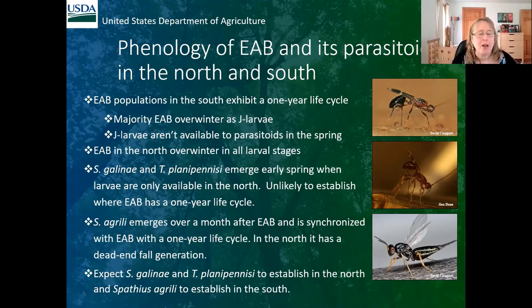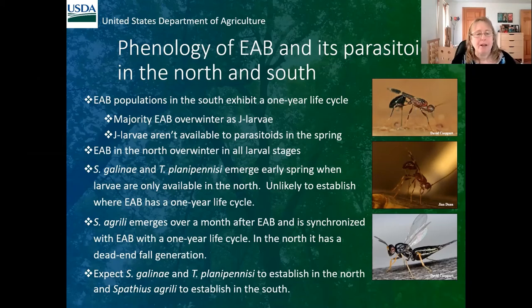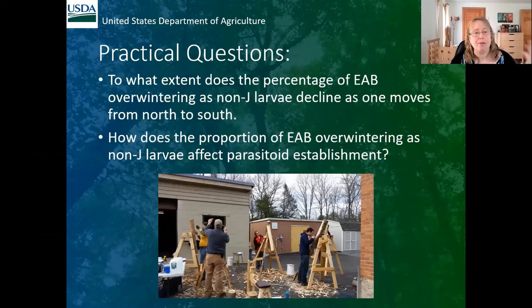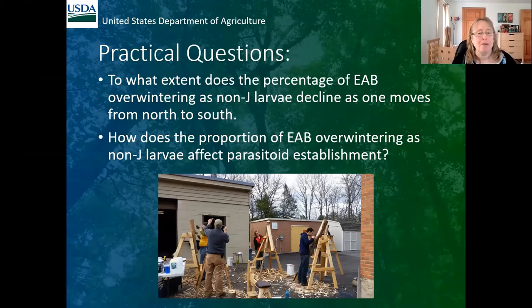We discovered that Spathius agrili emerges well over a month after EAB does and is synchronized with EAB that has a one-year life cycle. We also found that in the north it has a dead-end fall generation, which explains why it was not establishing. Our expectation is that Spathius galinae and Tetrastichus planipennis will establish in the north, and Spathius agrili will establish in the south. But north to south there's a gradient of temperatures and conditions, so we wanted to examine practical questions about this transition.